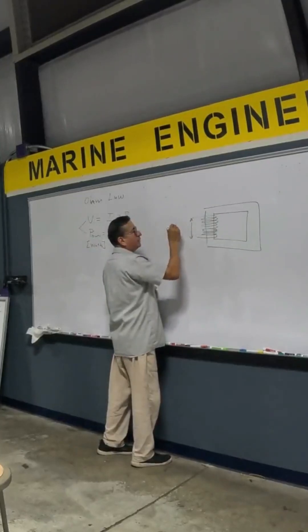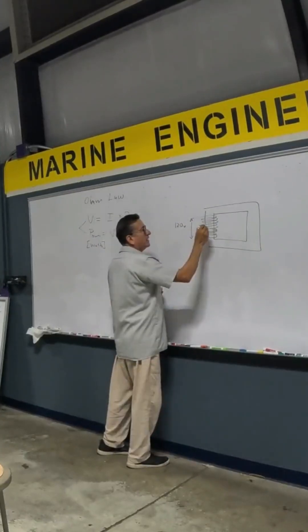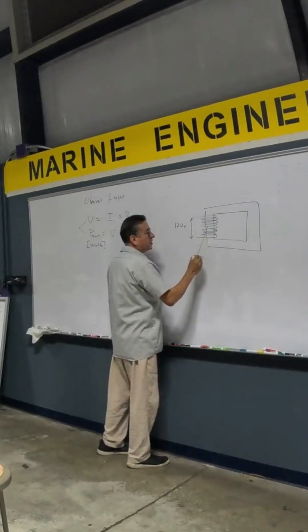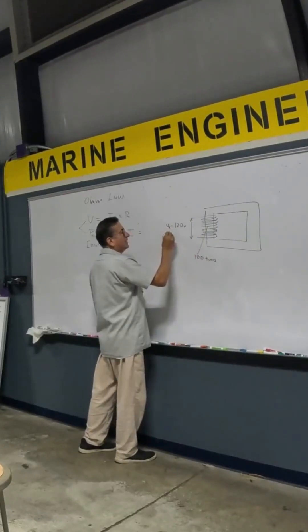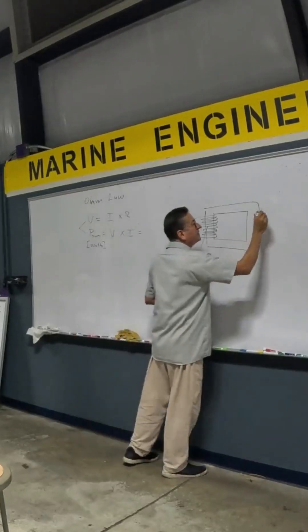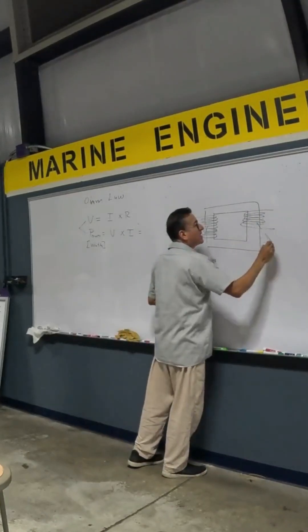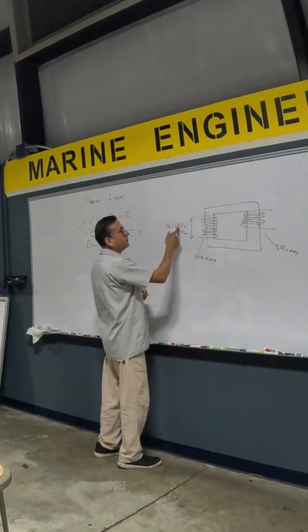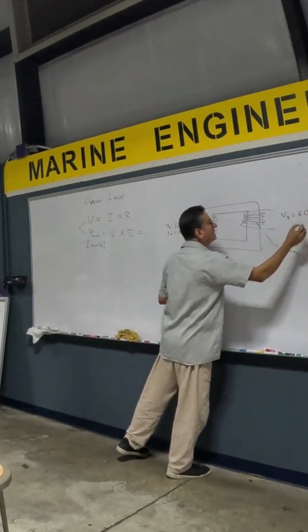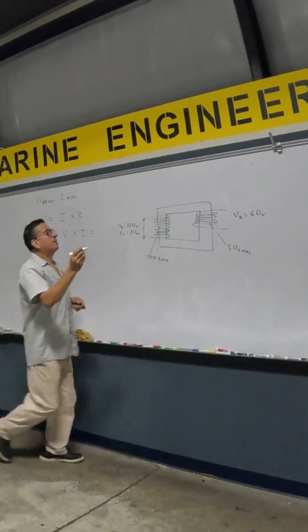I am going to introduce at the input 120 volts. We are going to create here 100 turns and the intensity in the primary here is 20 amps. And here in the secondary I have 50 turns. Of course, because it's 50, what is the output voltage here? It's 60 volts.